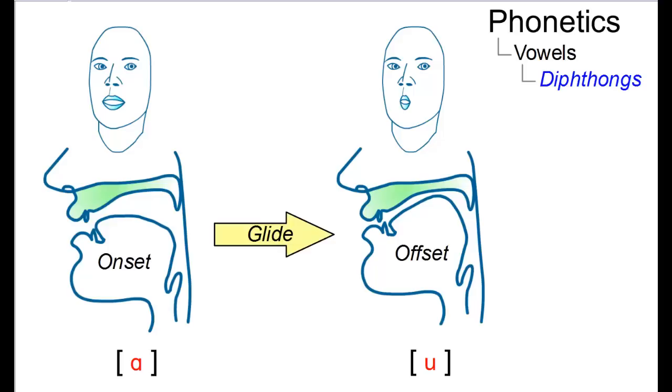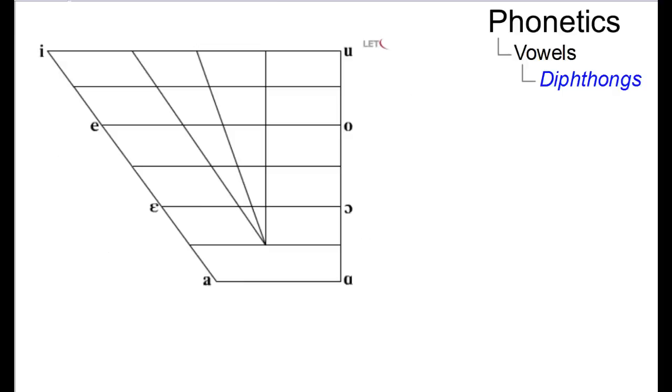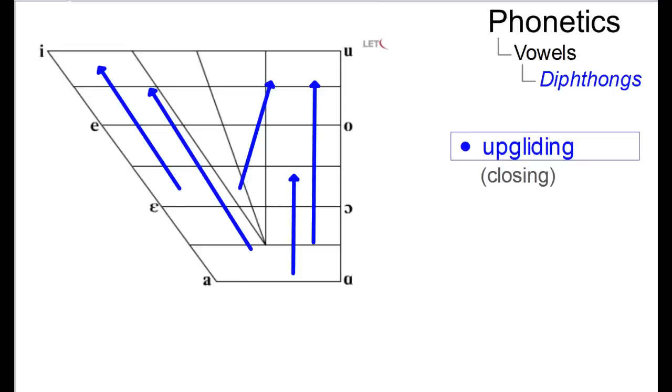Diphthongs can be classified in several ways. The most popular one uses the cardinal vowel chart and defines diphthongs on the basis of the direction of their glides as upgliding or closing, where the onset is lower than the offset.